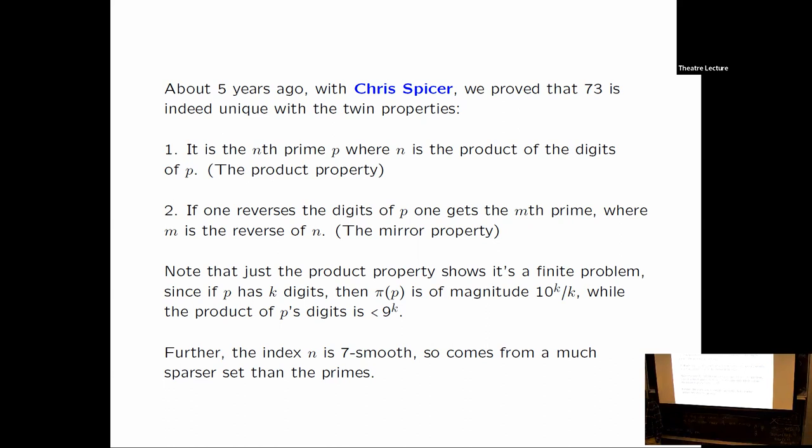Not that skilled in computation, but we used some other ideas. One of the ideas, well there's some obvious things that you can use. For example, the prime should not contain a digit zero. Obviously if the product of the digits is zero, that wouldn't work. Let's see, the number should be seven smooth. The product of the digits should be seven smooth, because if you multiply a number with integers between one and nine, you're not going to involve any primes above seven.